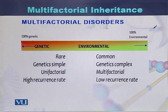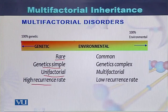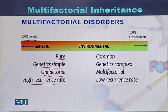In this diagram we can see the difference between genetic diseases and multifactorial diseases. Those diseases which are rare have simple genetics, are unifactorial, and have a high recurrence rate. These diseases are one hundred percent genetic and one hundred percent hereditary.